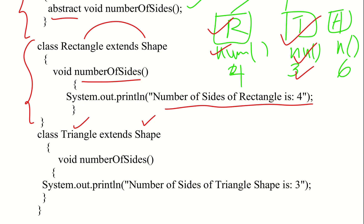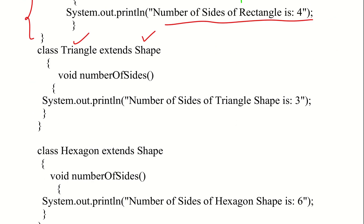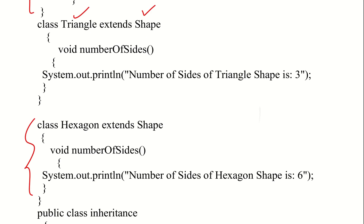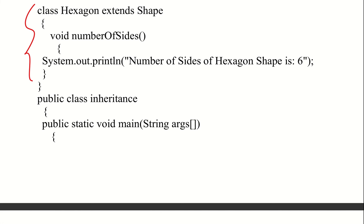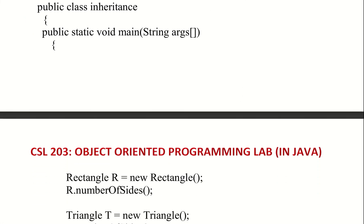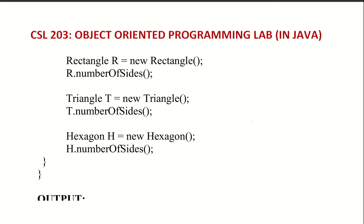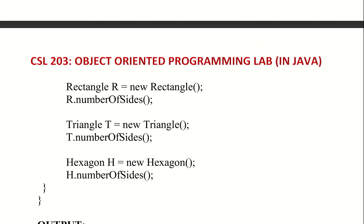The Hexagon class also extends Shape, and the number of sides of the hexagon shape is 6. We then invoke the methods by creating objects. The child class objects are created — three objects for the three child classes.